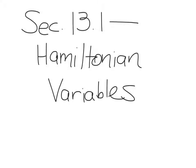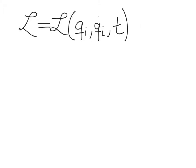In this section, we'll discuss the variables that go into defining the Hamiltonian. Before we dive in, let's first review some important results from a previous section. A lot of this discussion is going to come from section 7.8 earlier in the book.